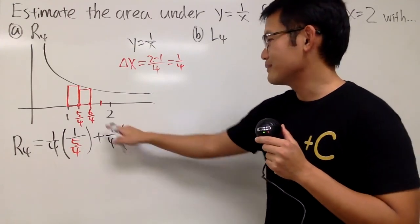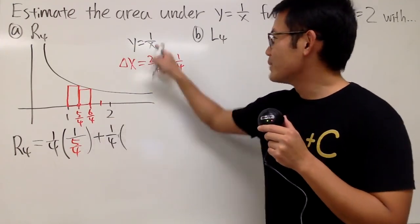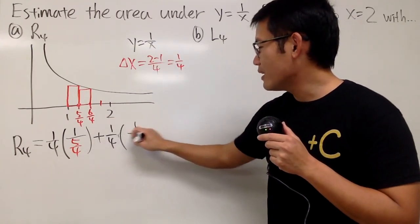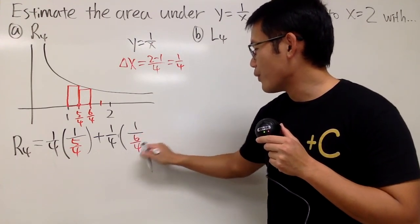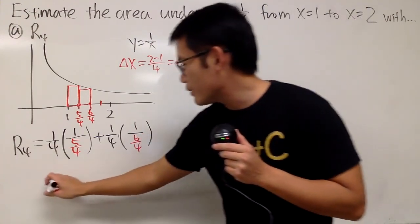Put this right here, we get 1 over 6 over 4, like this. And then we have two more to go.